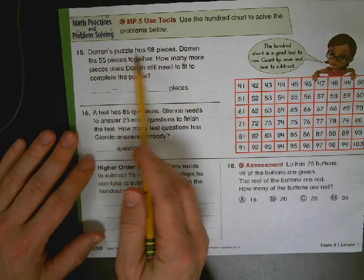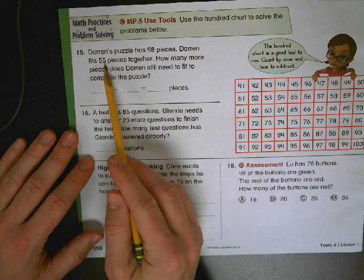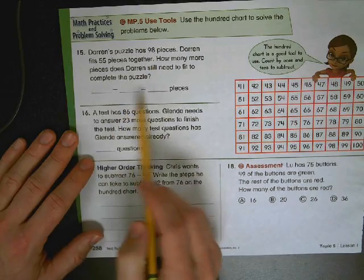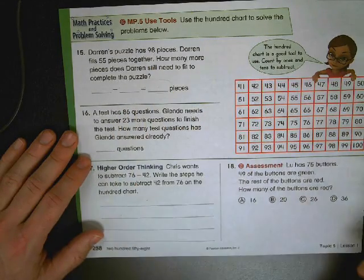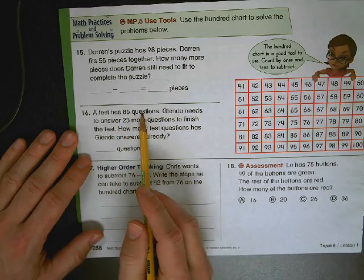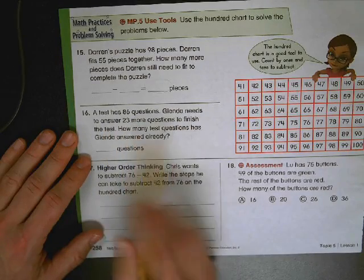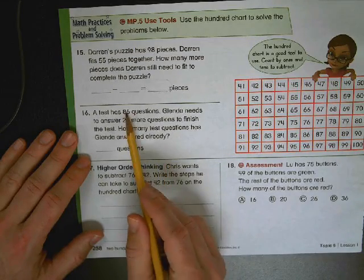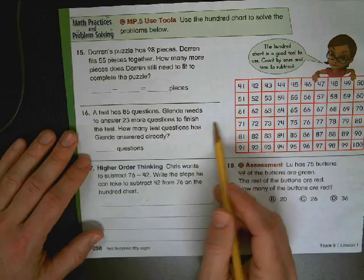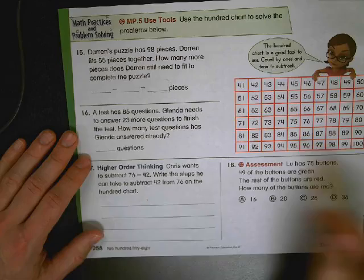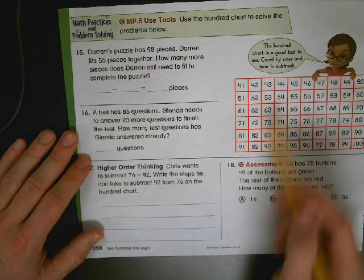On the back, I'll read it for you. You're going to be on your own. Again, I would just use this hundreds chart to answer all three. Darren's puzzle has 98 pieces. Darren fits 55 pieces together. How many more pieces does Darren still need to complete the puzzle? So you're going to use 98 and 55 and find a solution. Use the hundreds chart. Start with 98. Take away 55. A test has 86 questions. Glenda needs to answer 23 more questions to finish the test. How many test questions did she answer already? 86 minus 23. Now you could stack them and subtract down, but we're using the hundreds chart. Use the strategy. Get a different colored crayon. Show your work over here.